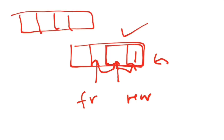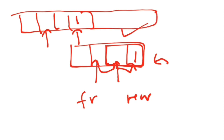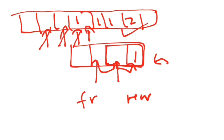In a queue, the front is at one end and the rear at the other. You insert elements from the rear and keep on deleting from the front. When you delete, you shift the front pointer. So the first element which you inserted will be output first, then the next, then the next — that is FIFO.